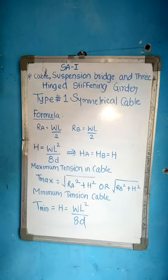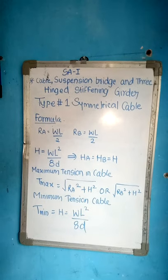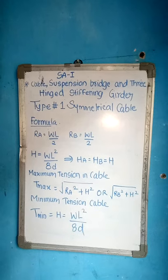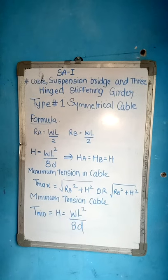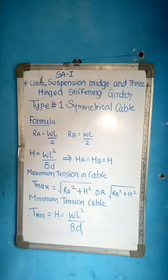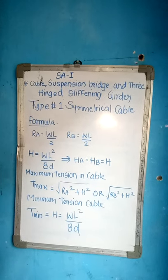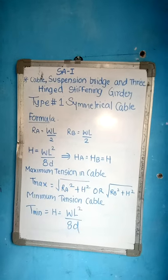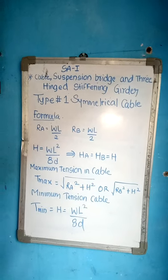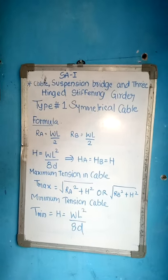Structural Analysis 1, Essay 1, new topic: Cable Suspension Bridge and Three Hinged Stiffening Girder, Type Number 1 - Symmetrical Cable. Formula for symmetrical cable: To solve the problem based on symmetrical cables, we have to calculate reactions RA and RB.